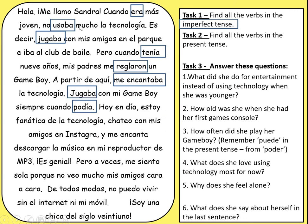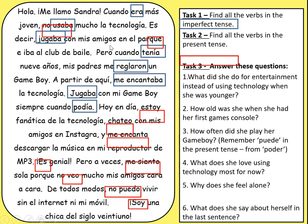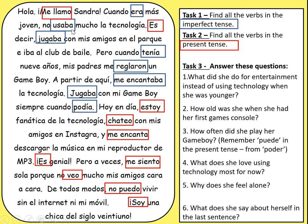Let's find all the imperfect tenses. We've got: 'era', 'usaba', 'jugaba', 'tenía', 'regalaron', 'me encantaba', 'jugaba', 'podía'. Note that 'regalaron' isn't actually imperfect — it's a past tense but not imperfect, as it hasn't got 'aba', 'era', or 'ía'. The present tense verbs are all the others — 'me llamo' and phrases like 'hoy en día', where she switches to talking about what she uses technology for and what she thinks about technology in the present.